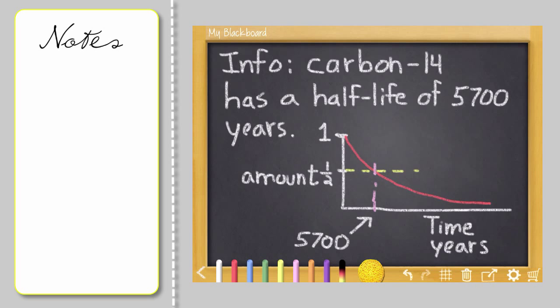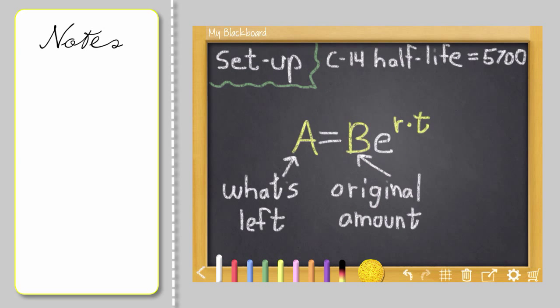Here's the setup for the equation. Write in the variables you already know. Since we know half of the carbon-14 remains, then we know A. The original amount of stuff you started with is 1. It could be 1 gram, 1 pound, whatever. Just so you know you started with some amount, and this side is half.